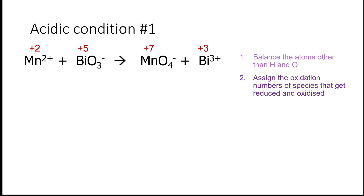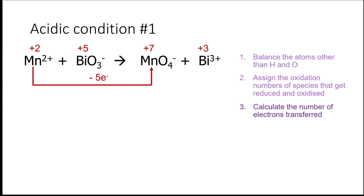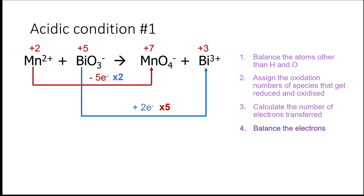The third step is to calculate the number of electrons being transferred. Manganese going from an oxidation state of +2 to +7 must have lost 5 electrons, and bismuth gains 2 electrons. The fourth step is to make sure that the number of electrons lost equals the number of electrons gained. We can do this by finding the lowest common multiple of the two electron numbers. In this case, we multiply 5 electrons by 2 and multiply 2 electrons by 5. Now multiply the coefficients of manganese by 2 and bismuth by 5.